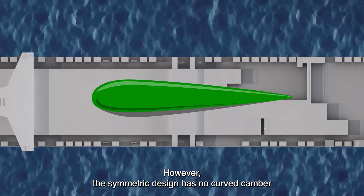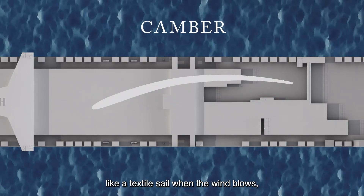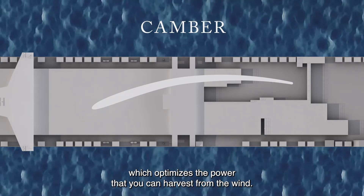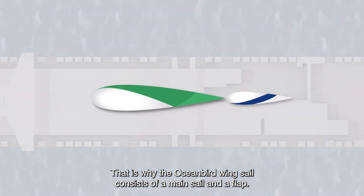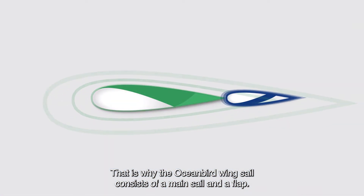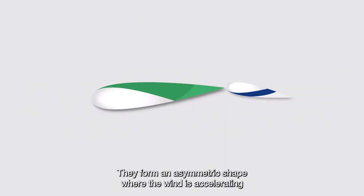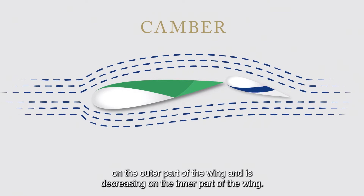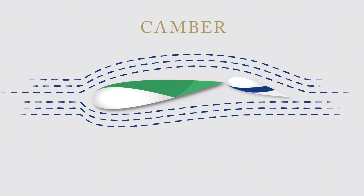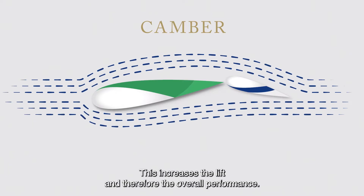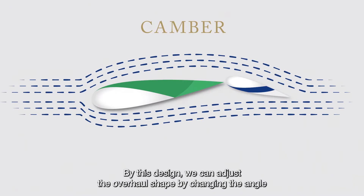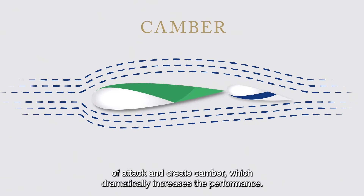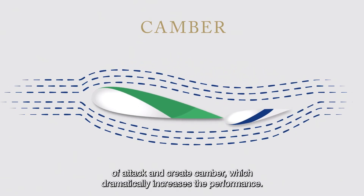However, the symmetric design has no curved camber like a textile sail when the wind blows, which optimizes the power that you can harvest from the wind. That is why the Oceanbird wingsail consists of a mainsail and a flap. They form an asymmetric shape where the wind is accelerating on the outer part of the wing and decreasing on the inner part, increasing the lift and overall performance. By this design we can adjust the overall shape by changing the angle of attack and create camber, which dramatically increases the performance.